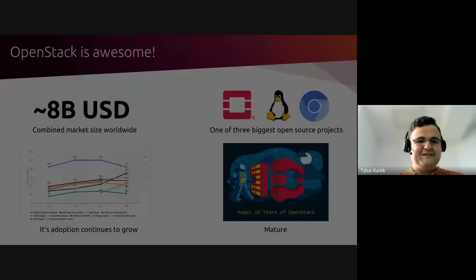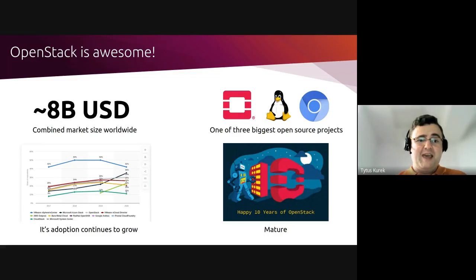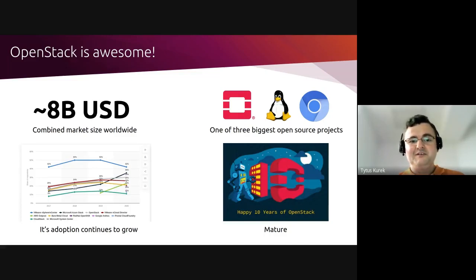I'm going to start with a very strong statement: OpenStack is actually awesome. I love OpenStack. Its combined market size worldwide is around 8 billion dollars, which is more than the combined market size of containers — so OpenStack is bigger than container platforms. It's one of the three biggest open source projects with regards to number of contributions, and those three projects are OpenStack, the Linux kernel, and Chromium.